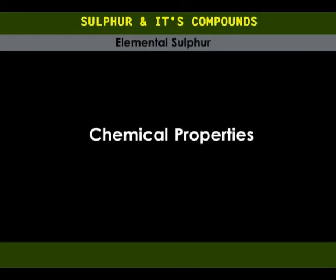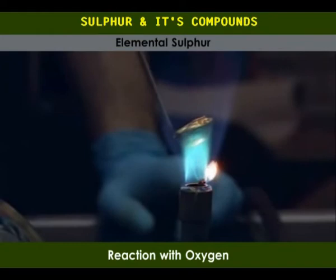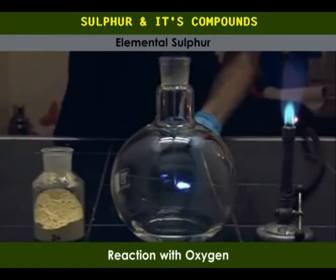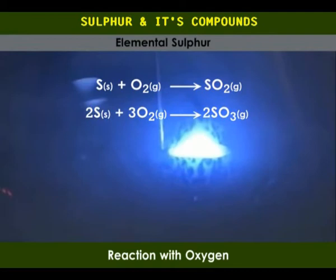Chemical properties of sulfur: Reaction with air. Sulfur melts and catches fire, burning with a blue flame. It burns in pure oxygen with a brilliant blue flame. In either case, sulfur combines with oxygen to form sulfur dioxide, which has a choking smell. Traces of sulfur trioxide (SO₃) are also formed. The sulfur dioxide dissolves in water to form sulfurous acid.